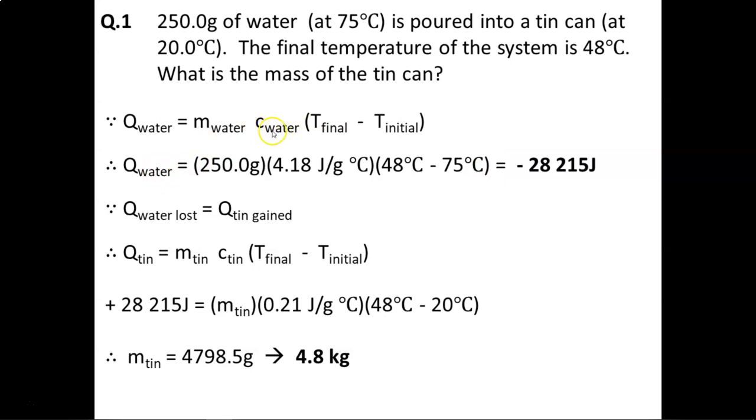Again, C is the heat capacity, in this case for the water. Heat capacity values are given to you, except water. Typically, you will have to memorize that one yourself because we use it so often. But the heat capacity for other substances like tin, I would not expect you to memorize that. That will be given to you in a table.